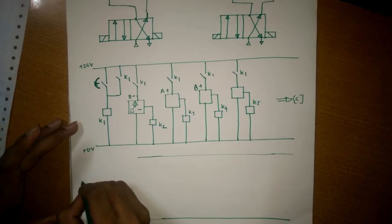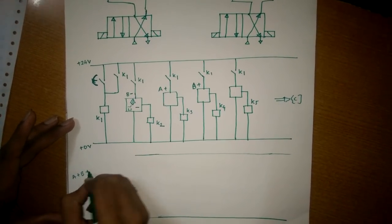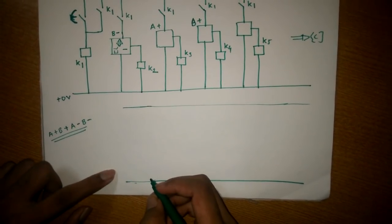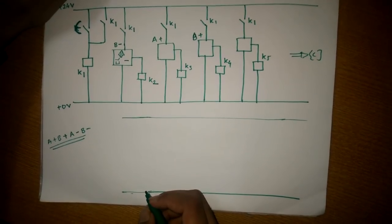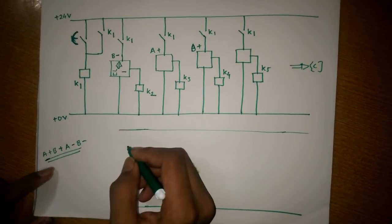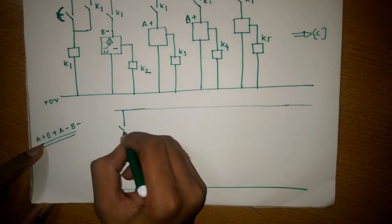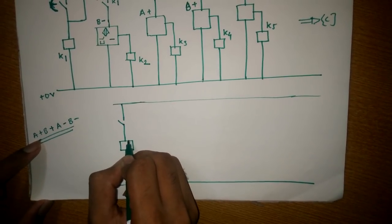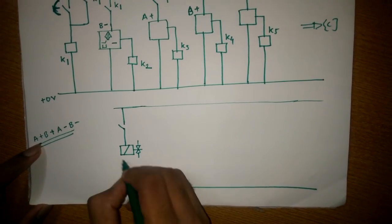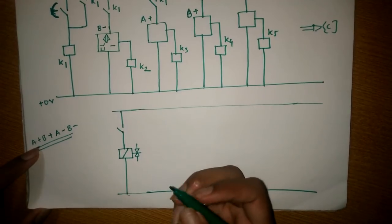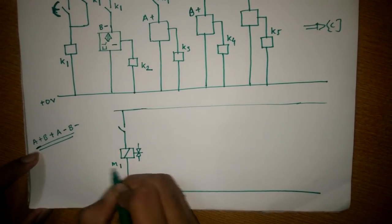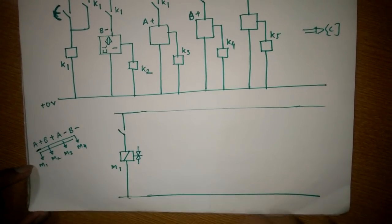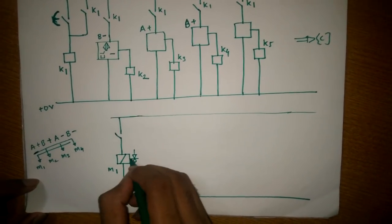For input, the sequence is A+ B+ A- B- — this is your sum. For the output, you start from the start point, that is A plus. First you draw the key and then you draw the solenoid diagram for the output. This is your symbol for the solenoid — M1, M2, M3, M4.